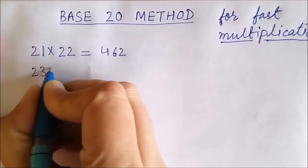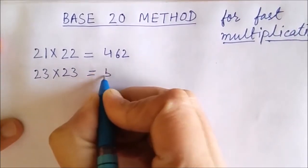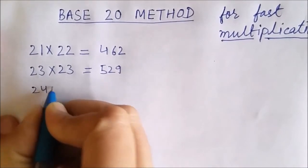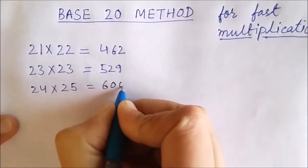Let us take one more example. 23 multiplied by 23. My answer is 529. If 24 is to be multiplied by 25, my answer is 600. How I am doing?